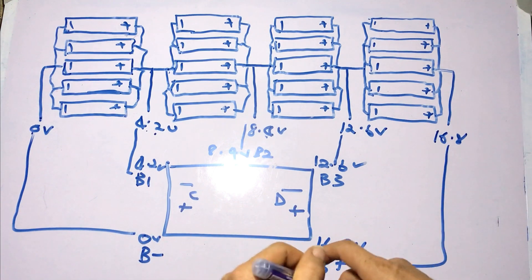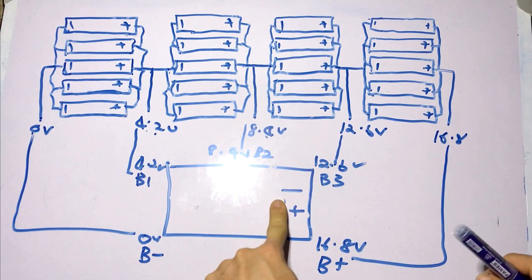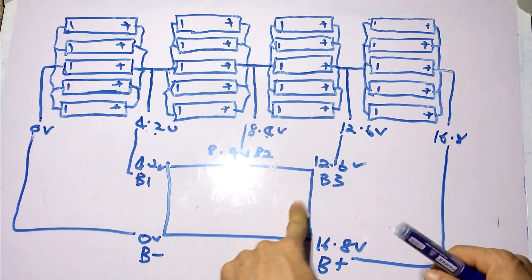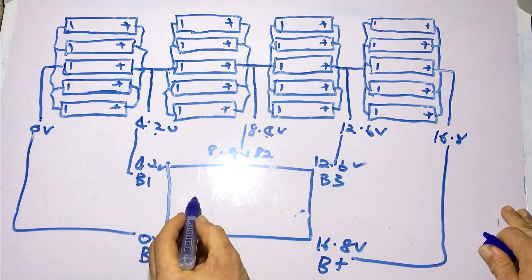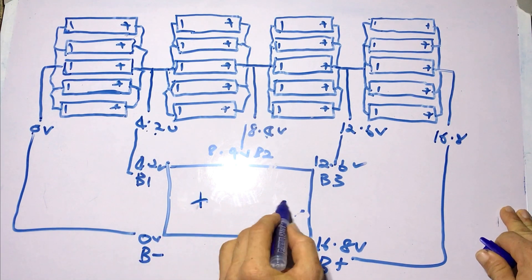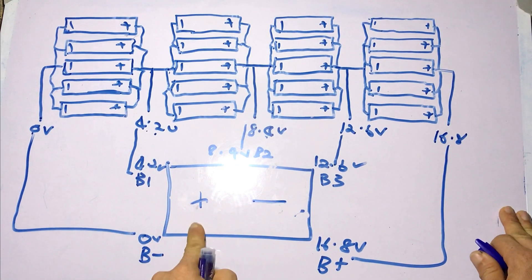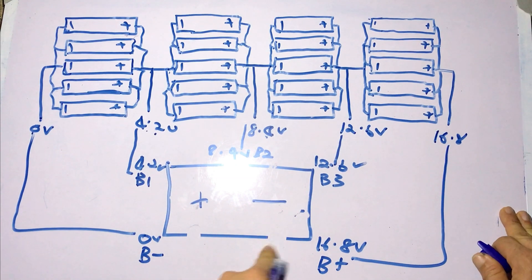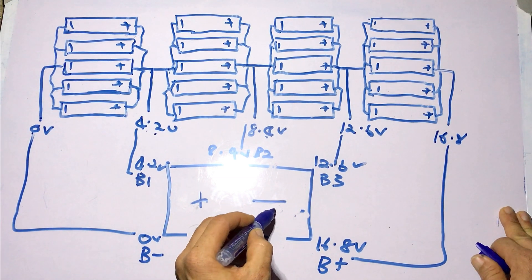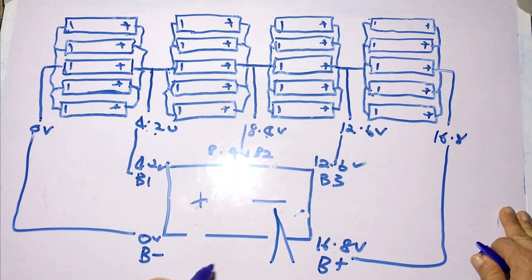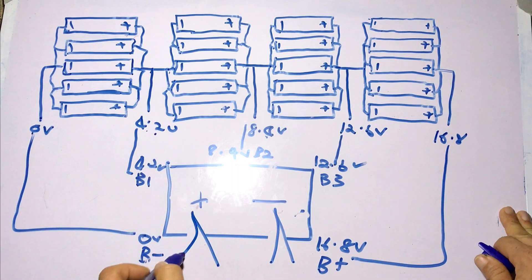For some BMSs, you don't have these connections separated. You have just one connection for input and output and this is what it will look like. You have a plus minus. Then you have to split this connection so you can have one for input and one for output. Split the negative connection into two and split positive into two.